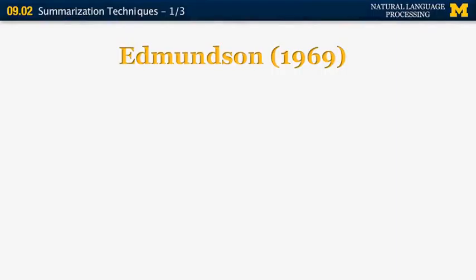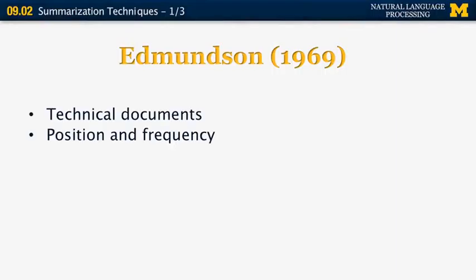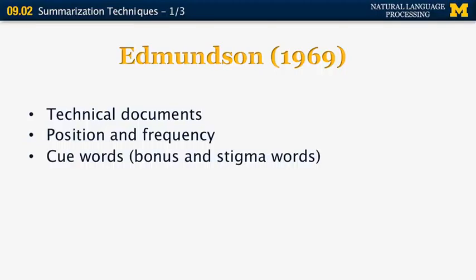A more recent paper is by Edmondson from 1969. It also uses technical documents and uses the features of position and frequency, just as in previous work. But it also looks at Q words, which are categorized into bonus words and stigma words. Bonus words are things like 'significant accomplishments,' and stigma words are things like 'hardly' and 'impossible.' These words are typical for scientific papers and indicate the most informative portions.